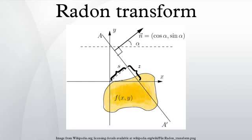Where ds is the arc length measure on the line L(α,s). Note that the transform integrates the weighted function f along the lines L(α,s).